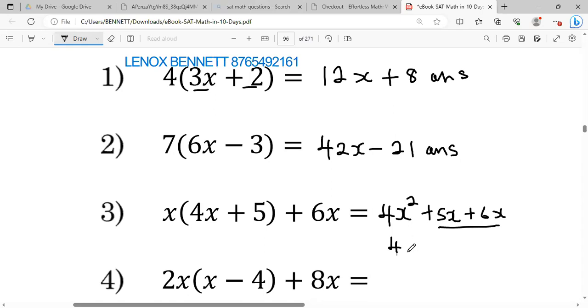So we can just put back the 4x² because only one x² is there, and we just add 5 and 6 to get 11x, and that would be our answer.